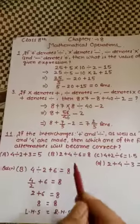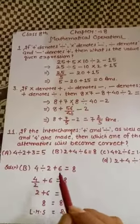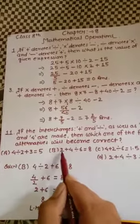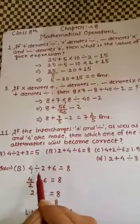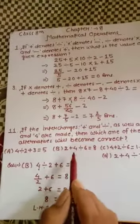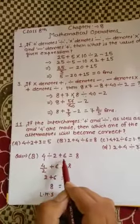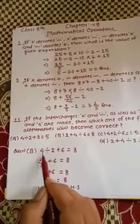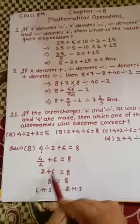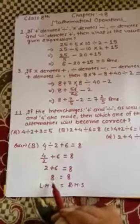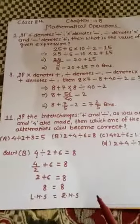The right answer is option B. Here, 2 should be replaced with 4, plus should be replaced with divide, and 4 should be replaced with 2, and divide should be replaced with plus. Solving according to BODMAS: 2 divided by 4 plus 6 becomes 2 plus 6, which equals 8. So this expression correctly follows the given information.